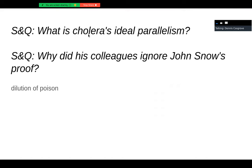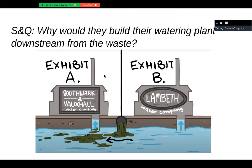What is cholera's ideal parallelism? It is a self-replicating poison — in 1854's terms — which was beyond their grasp. Why did colleagues ignore his proof? The idea of dilution of poison was the problem. People understood that arsenic in water could kill someone, but if diluted in a ton of water, they wouldn't get sick. The idea that there was enough poison in the Thames seemed crazy — there's so much water there. The self-replicating nature of the organism wasn't part of their thinking.